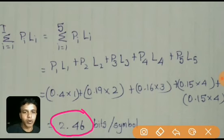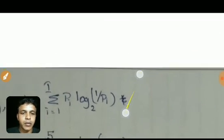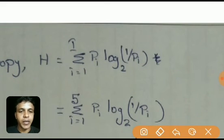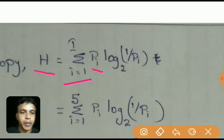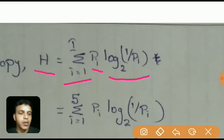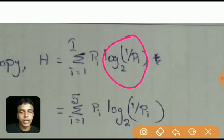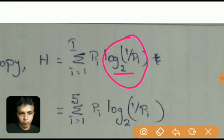The next step is to find the entropy. The formula is H = summation of p_i · log(1/p_i) to base 2. We need to be careful here: a scientific calculator gives logarithm values in base 10, but we need base 2. So we apply a conversion: log base 2 of (1/p_i) equals log base 10 of (1/p_i) divided by log base 10 of 2.